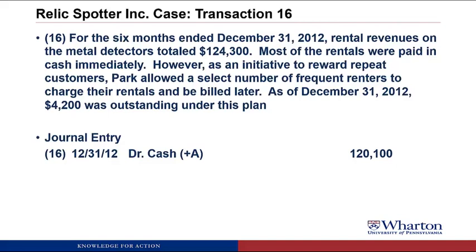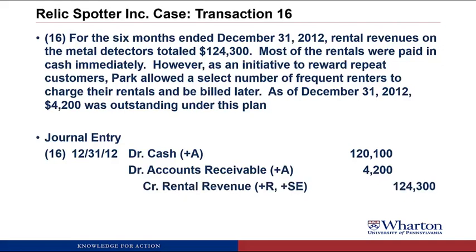We also have accounts receivable, which are an asset — we make assets go up through a debit, so we debit accounts receivable $4,200. We always use the term accounts receivable for money owed to us by customers based on providing them goods or services in the past. Now we're looking for the credit part of the journal entry: we credit rental revenue for $124,300, which increases revenue and increases stockholders' equity. Of the $124,300, $120,100 was received in cash and $4,200 has not yet been received but hopefully will turn into cash soon.